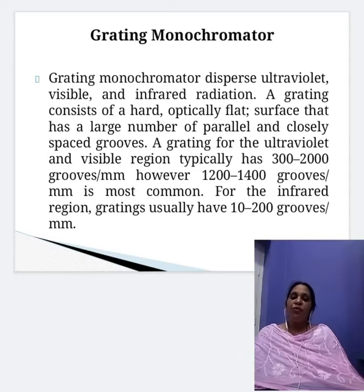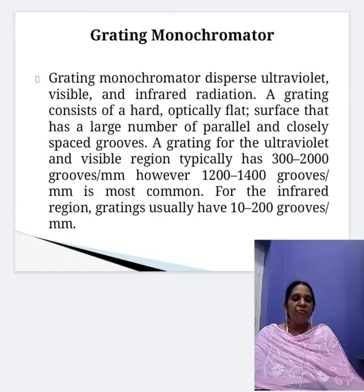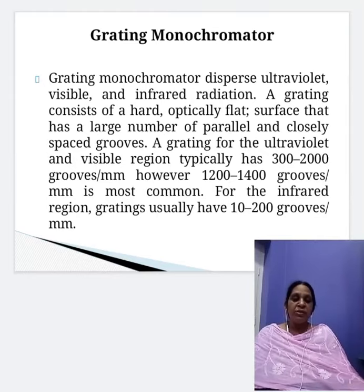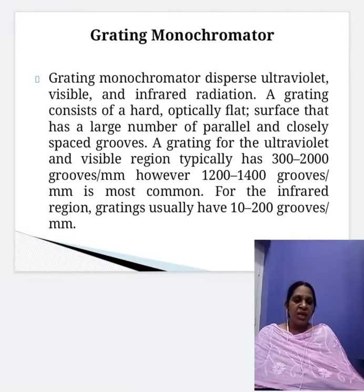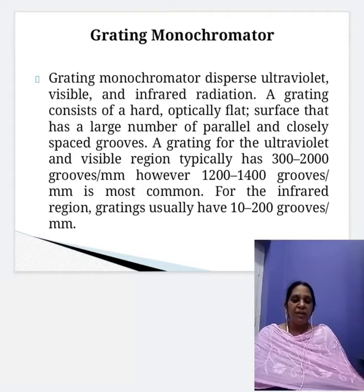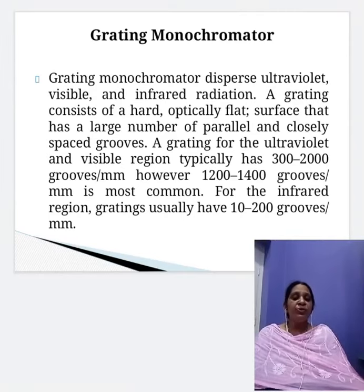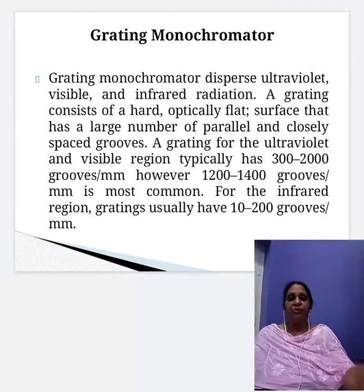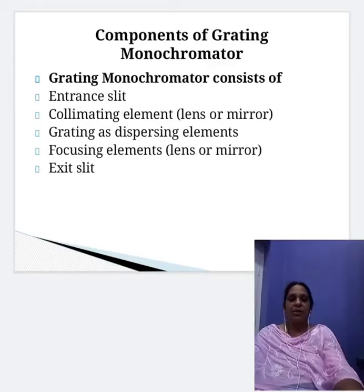A grating for the ultraviolet and visible region typically has 300 to 2000 grooves per mm. However, 1200 to 1400 grooves per mm is most common. For the infrared region, gratings usually have 10 to 200 grooves per mm — a very much smaller number.